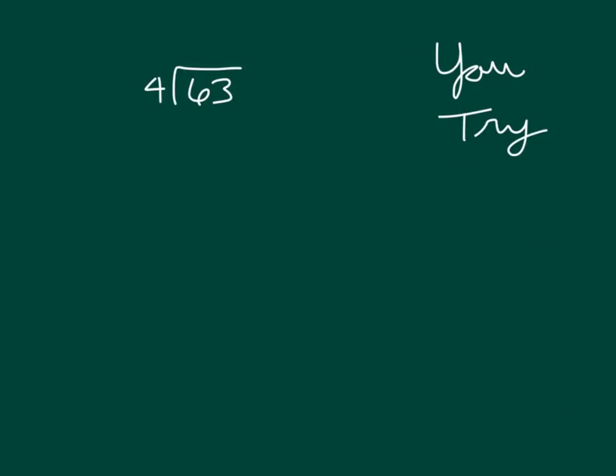Here we have 63 divided by 4. Your turn to try. Pause that video. Do we work with the 6 or the 3 first? Right, we work with the 6 and the 6 tens. We're dividing 6 tens into 4 groups. We can only put one 10 in each of those groups. That's why 1 times 4 is 4. We distributed 4 of those tens, leaving us with 2 remaining tens, which we can then look at with the 3 ones.